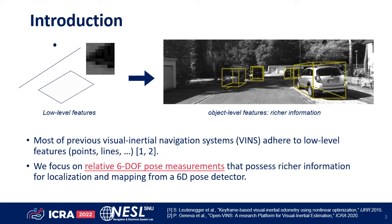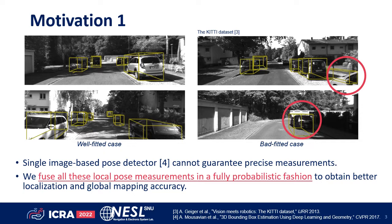It is hard to guarantee precise estimates from a single image-based pose detector. For instance, we see that a deep neural network-based pose detector outputs some noisy measurements, as in the right examples in the KITTI dataset. We fuse all of these local poses in a fully probabilistic fashion to decrease localization and mapping errors.